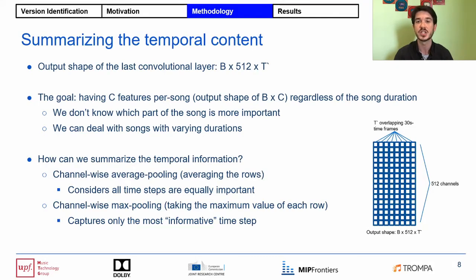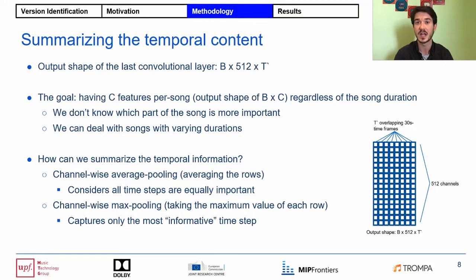One idea is to use channel-wise average pooling, meaning taking the average value of each row. This technique would consider all time steps as equally important. However, intuitively, in pop or rock songs, the chorus or verse may contain more useful information compared to the intro or the outro, so this technique may not be the most reliable one. Another idea is to use channel-wise max pooling, meaning taking the highest value of each row. Although this would work better than average pooling, we would consider only the most informative time step, and in some cases we may need to consider several parts of the song — in such cases, this technique would fail as well.